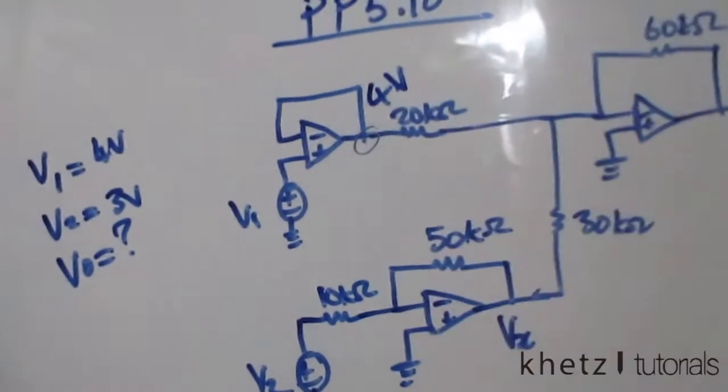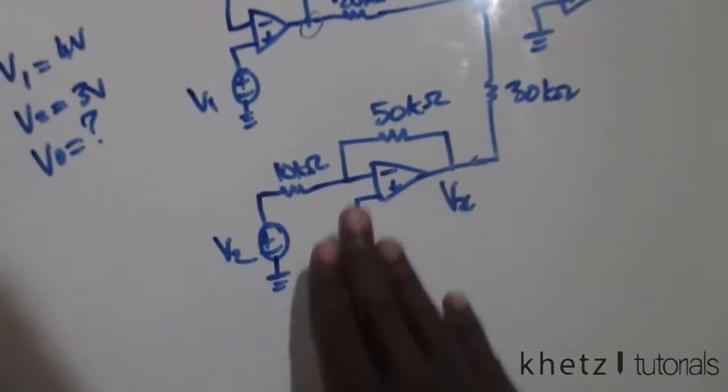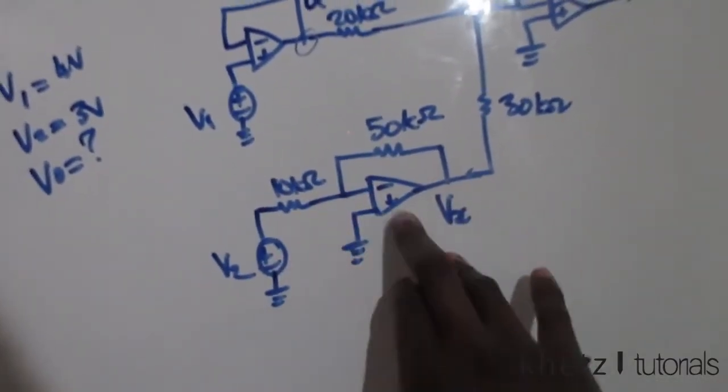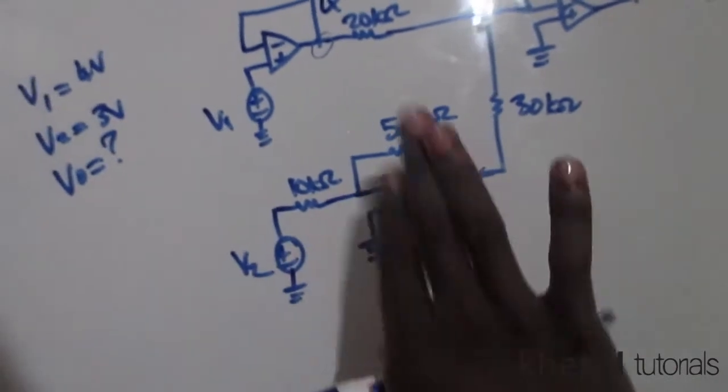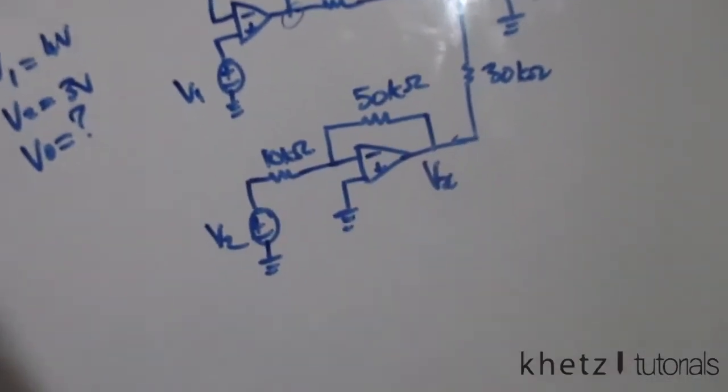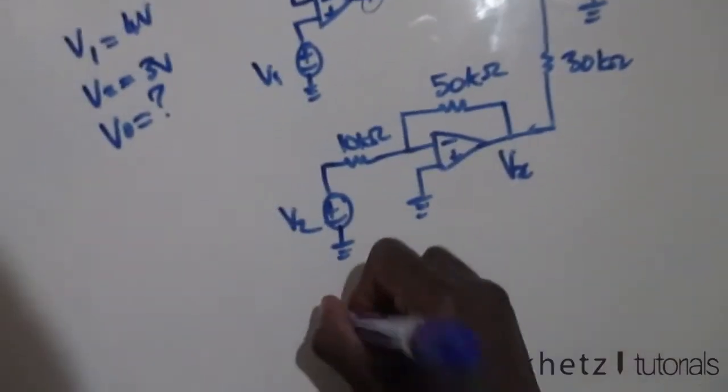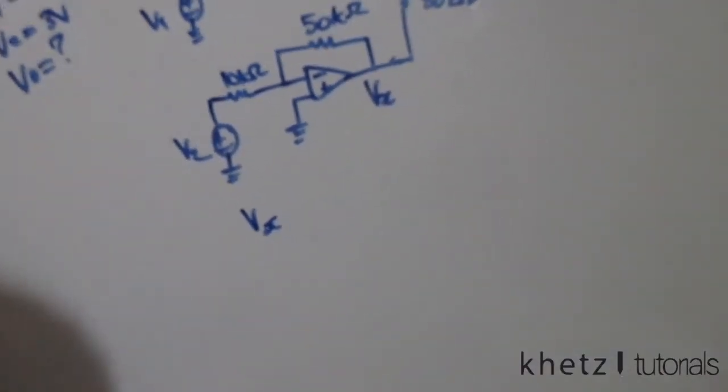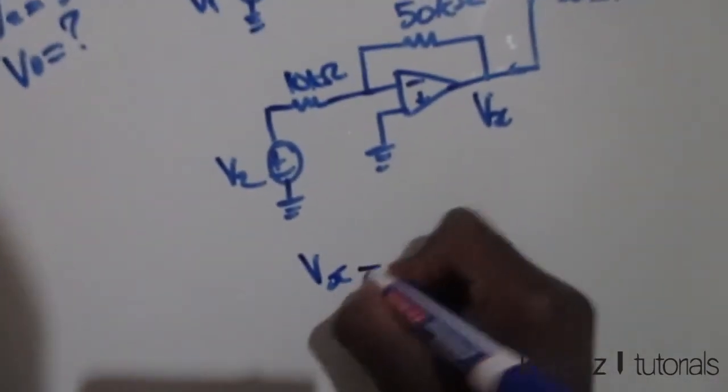And down here we have an inverting amplifier, the positive is grounded and so it qualifies. So Vx, which is the output from that point, Vx is equals to